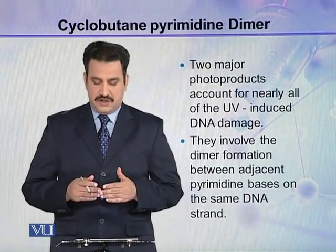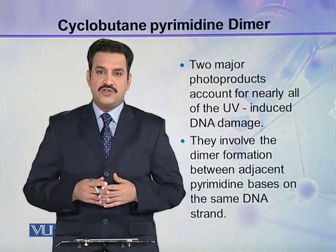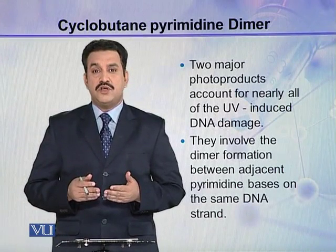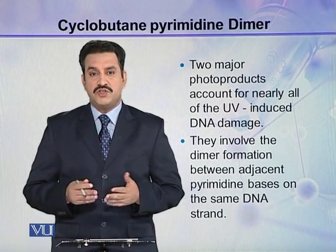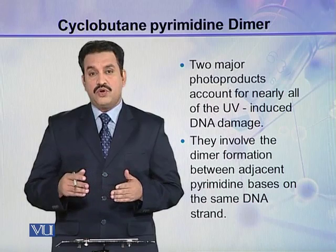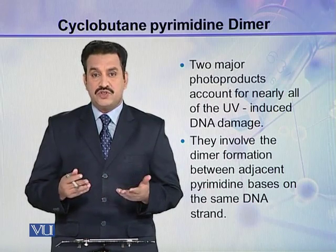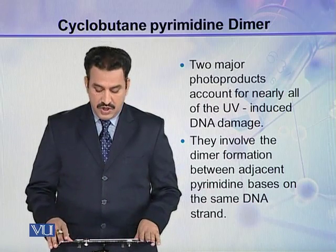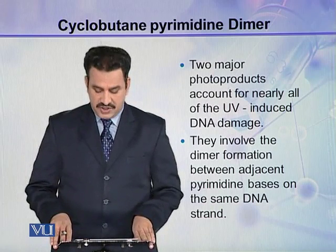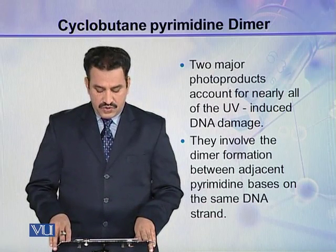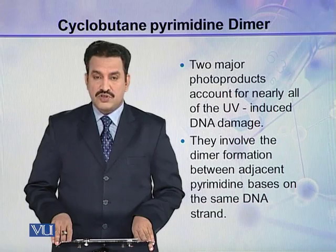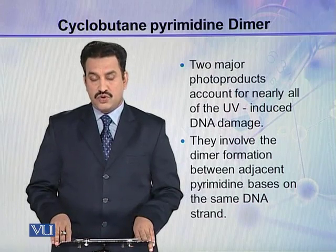As you have seen, UV light is damaging the DNA — it is one of the major causes of DNA mutations. So how does UV light damage the DNA? Mainly two major photo products account for nearly all of the UV-induced damage to the DNA.